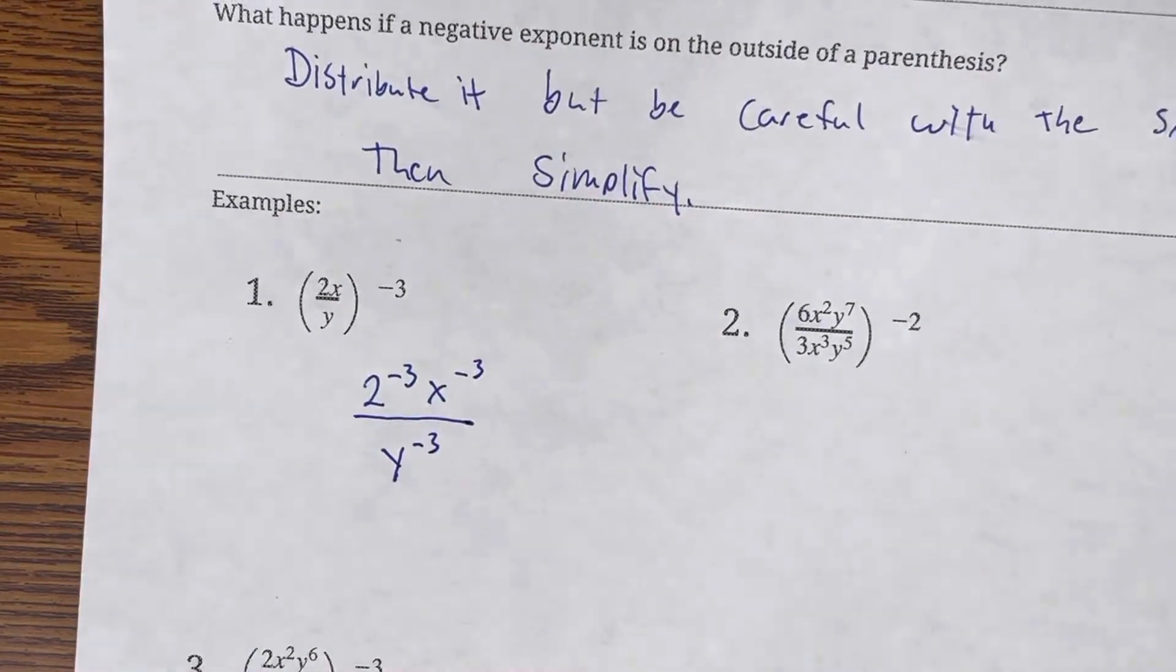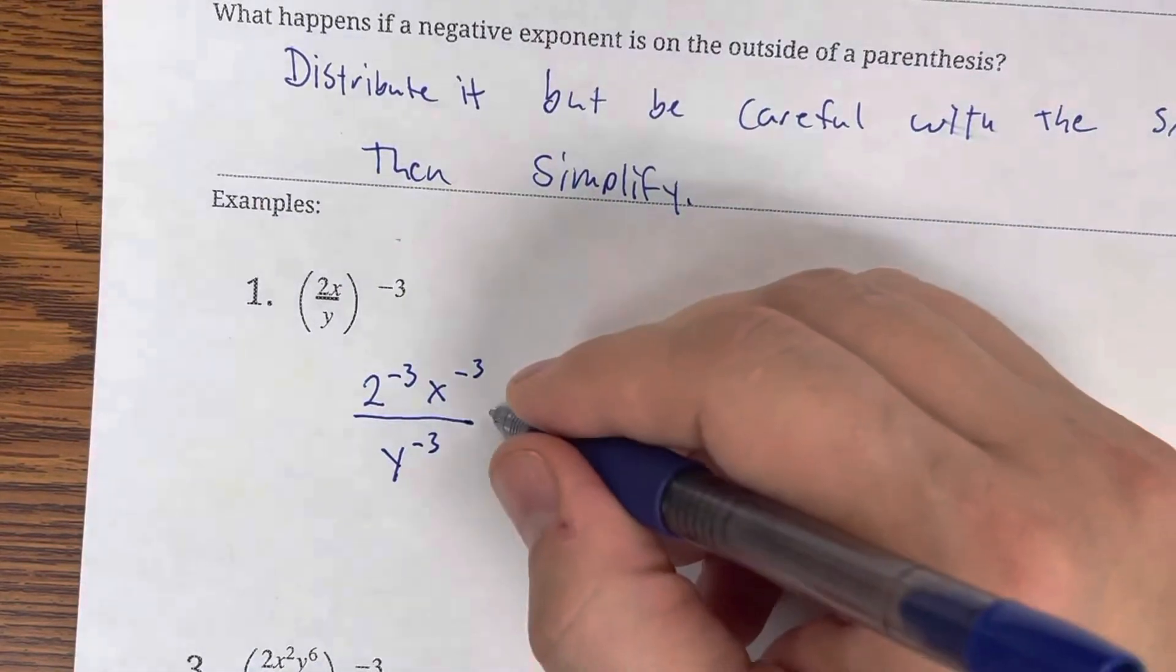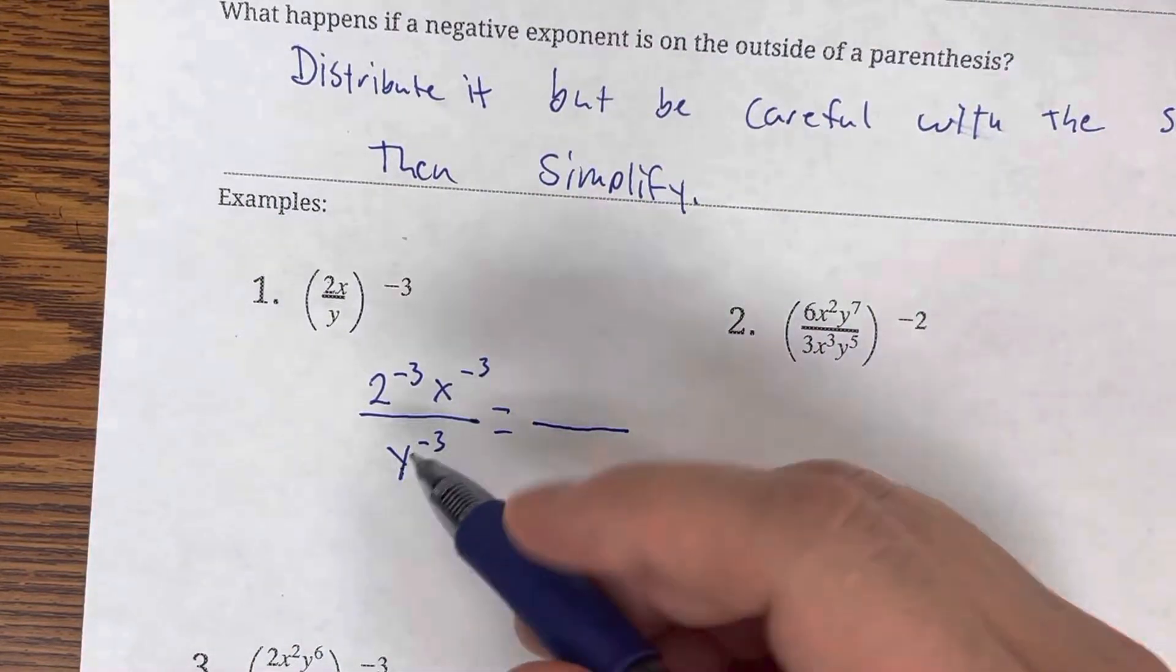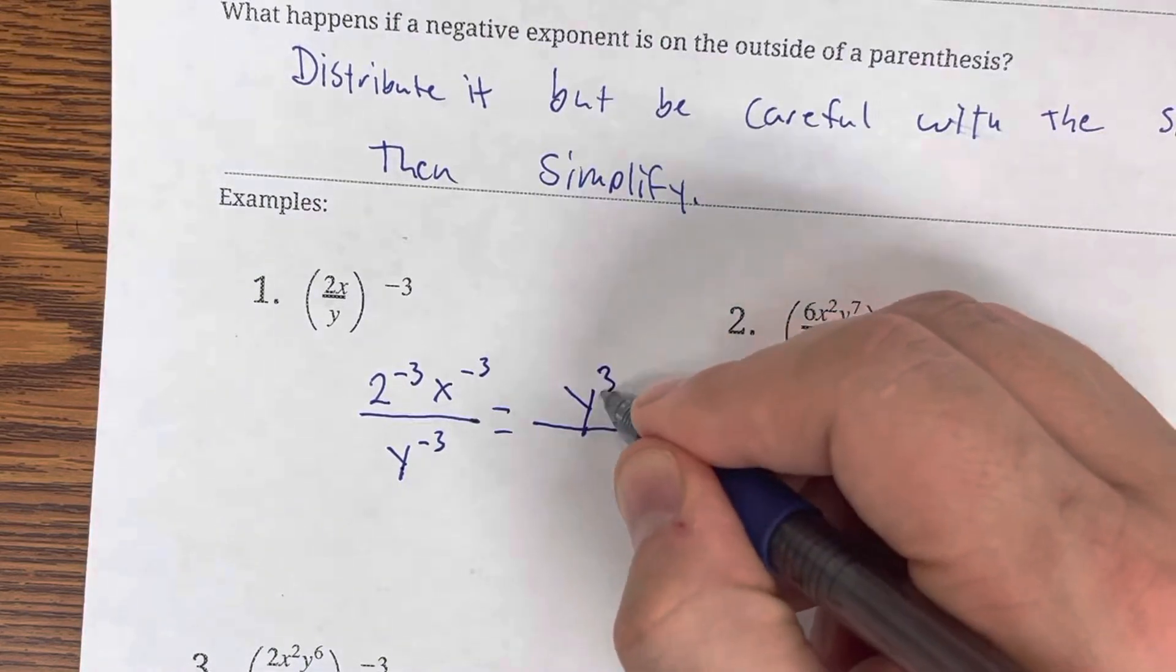Now the problem here is we have negative exponents all over the place, which we can't finish with. So we have to simplify by flipping it. We're going to bring our negative exponent from the basement up to the top, y to the 3rd.